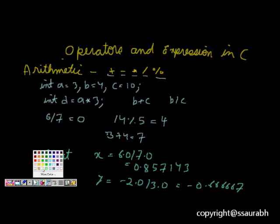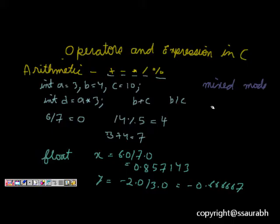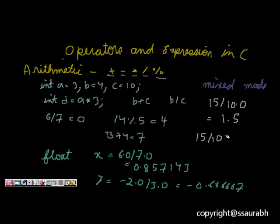Let's look at mixed mode arithmetic. If we have 15 divided by 10.0, it becomes 1.5. But if we had just 15 / 10 with both as integers, it would have been just 1.